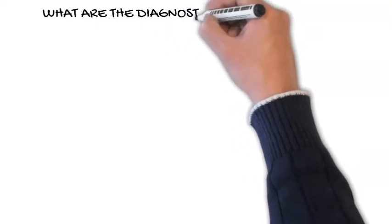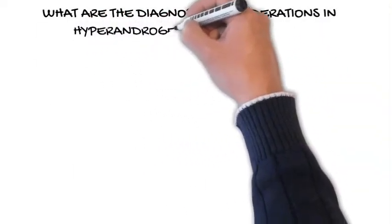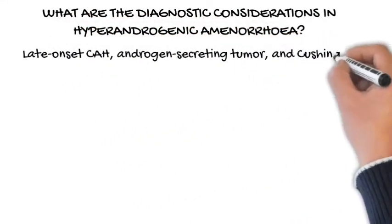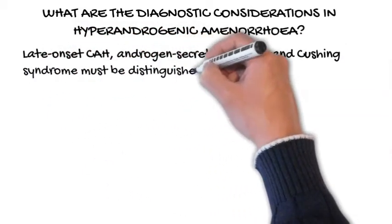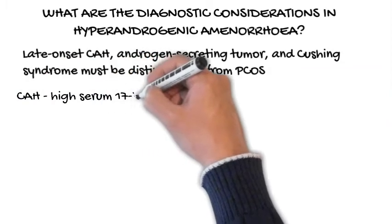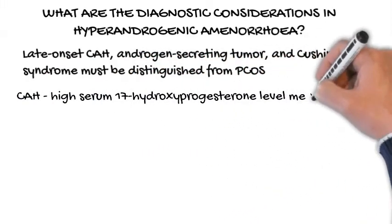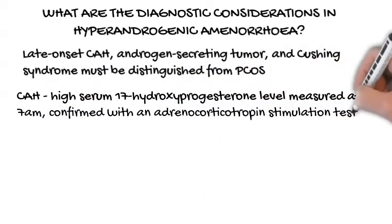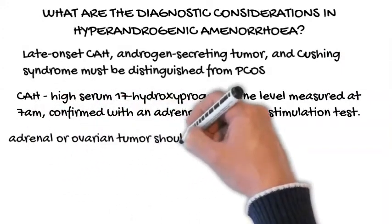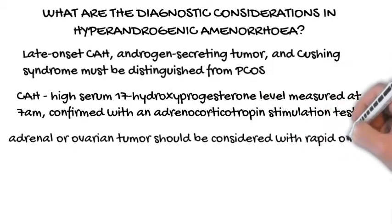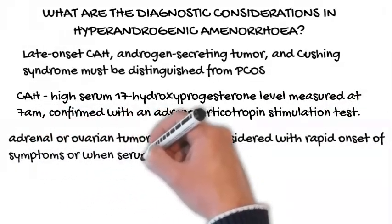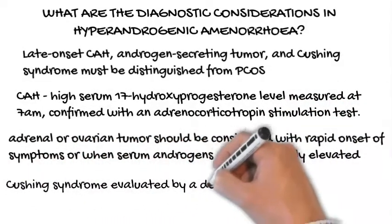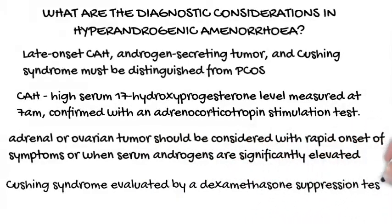What are the diagnostic considerations in hyperandrogenic amenorrhea? Late-onset congenital adrenal hyperplasia, androgen-secreting tumor, and Cushing syndrome must be distinguished from PCOS in the evaluation of hyperandrogenic amenorrhea. A high serum 17-hydroxyprogesterone level measured at 7am suggests congenital adrenal hyperplasia, which can be confirmed with an adrenocorticotropin stimulation test. An adrenal or ovarian tumor should be considered with rapid onset of symptoms or when serum androgens are significantly elevated. Rarely, hypercortisolism from Cushing syndrome may result in amenorrhea, and can be evaluated by a dexamethasone suppression test when stigmata of disease are present.